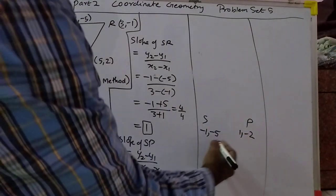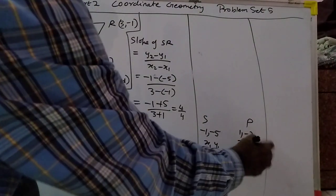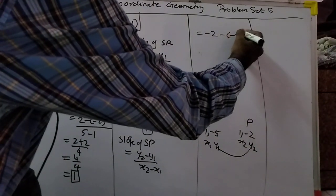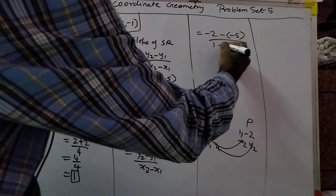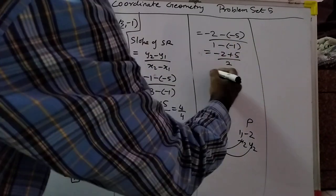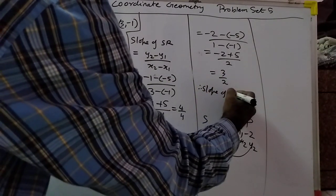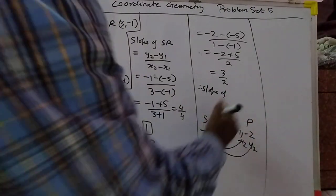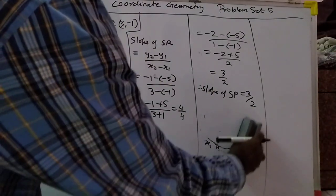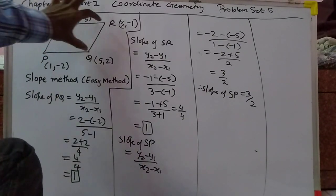For SP, we can write it: x1, y1 and x2, y2. We subtract — minus 2 minus 1, over 1 minus 1. That will become minus 2 plus 5 upon 2, that is 3 by 2. Therefore, slope of SP — we calculated for this and we calculate for this.